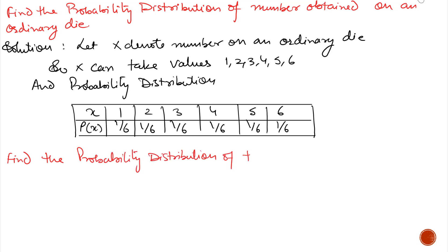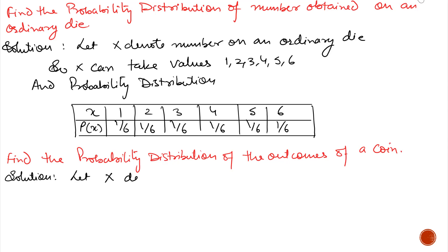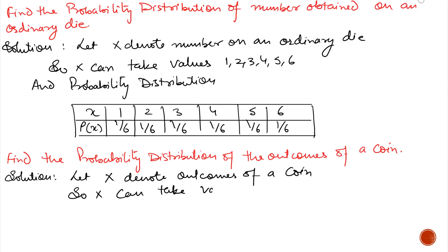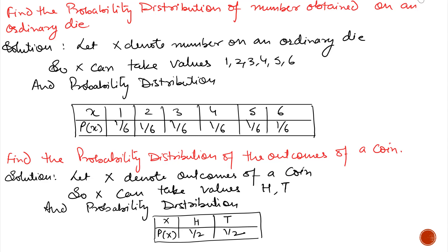One more example. Find the probability distribution of outcomes on a coin. When we toss an unbiased coin, we have two outcomes: either head or tail. So let X denote the outcomes of a coin. X can take values either head or tail. The probability of head is 1 by 2 and tail is 1 by 2. The sum of the probability of all the events always equals 1.